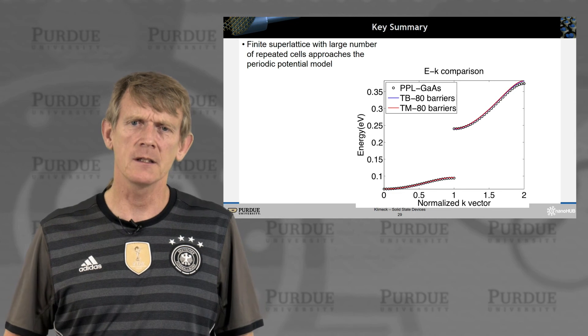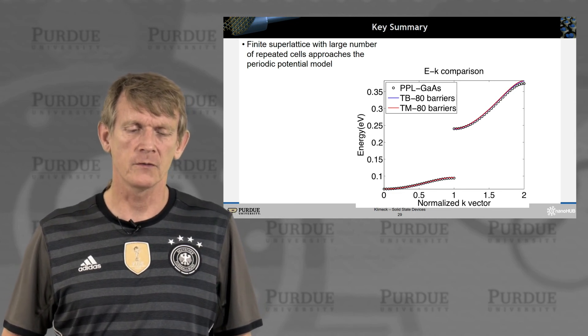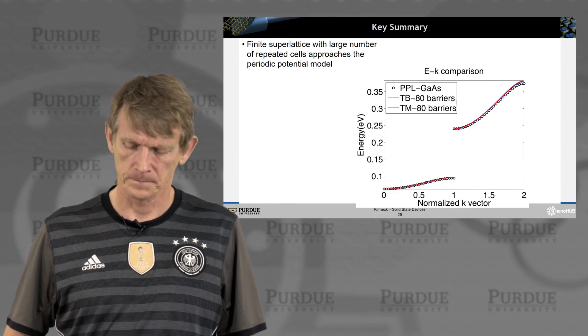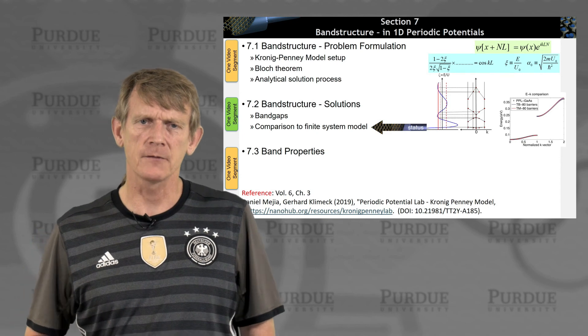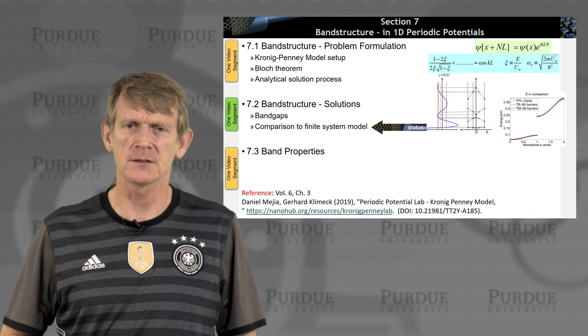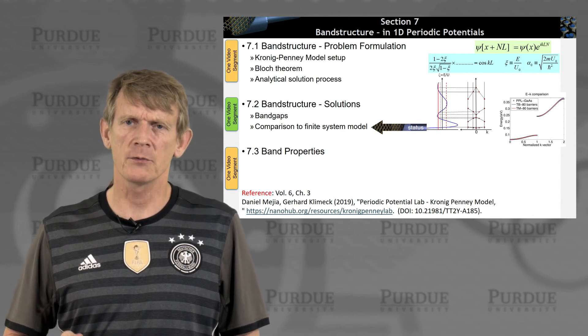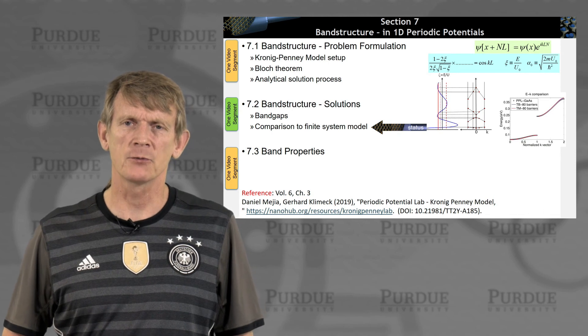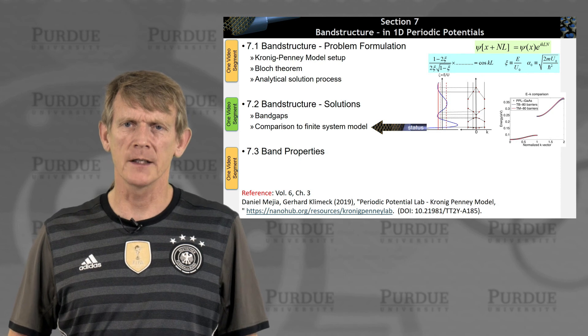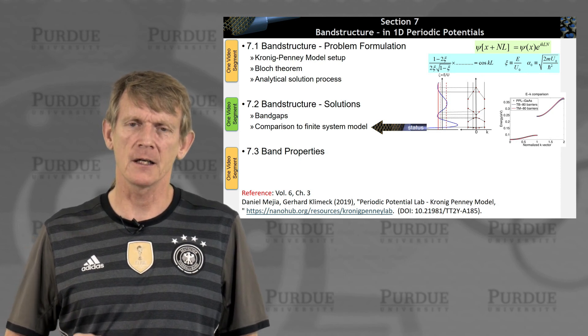So the key summary here is that a finite superlattice with a large number of repeated cells approaches that of a periodic potential. Effectively, they describe the same physics. What we're after is representing a system that is much too large, 10 to the 23 particles. We try to represent that with approximate methods.